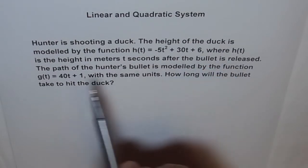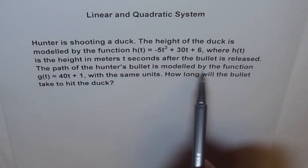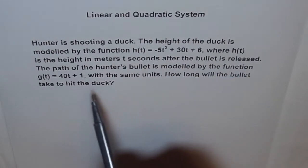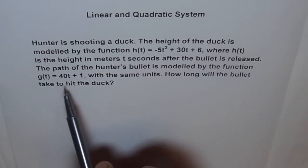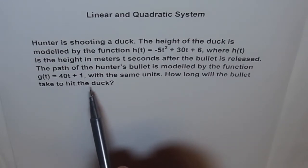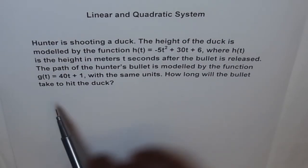where h(t) is the height in meters t seconds after the bullet is released. The path of the hunter's bullet is modeled by the function g(t) = 40t + 1 with the same units. How long will the bullet take to hit the duck?